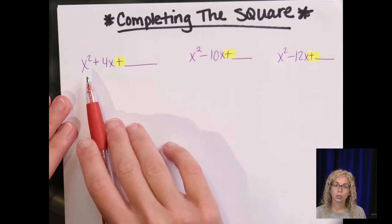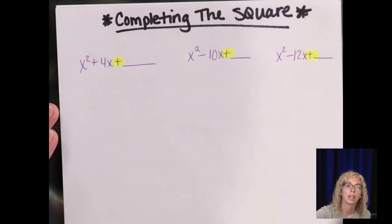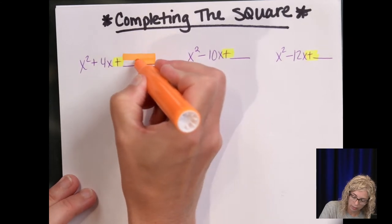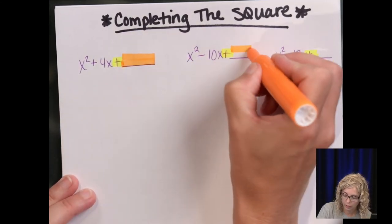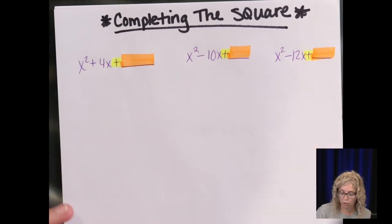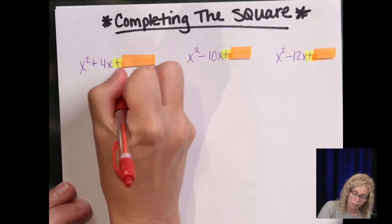Take a minute to write down these three trinomials, and I purposely left this last number, the constant, blank. I highlighted in yellow that the last symbol is always going to be a plus sign.